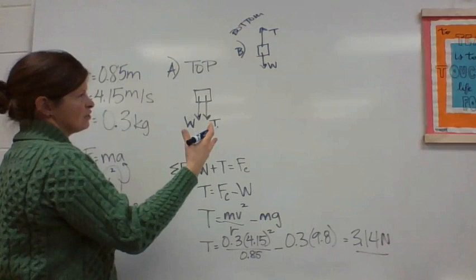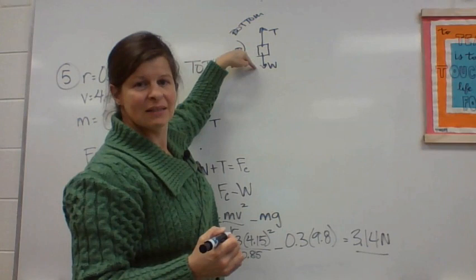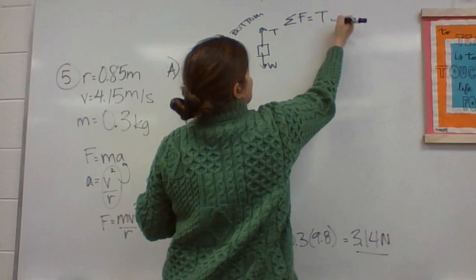So if I orient the center of my circle to be the positive direction, then tension is now positive and weight is negative. So my summation of forces is a positive tension minus a W equals FC.